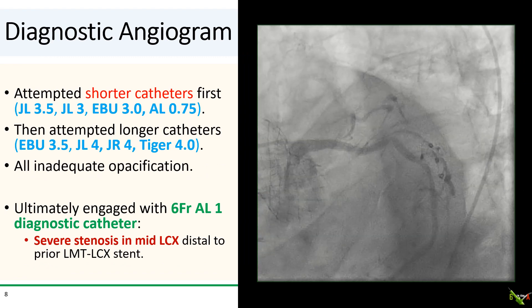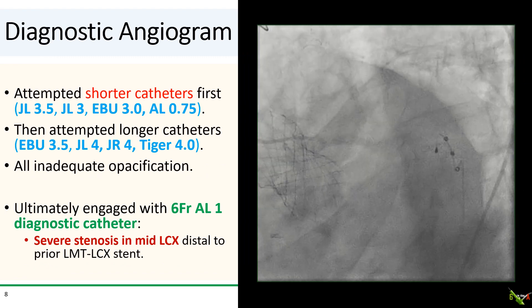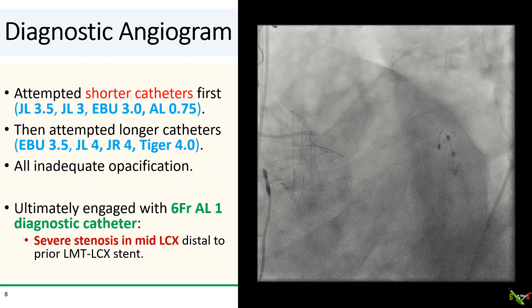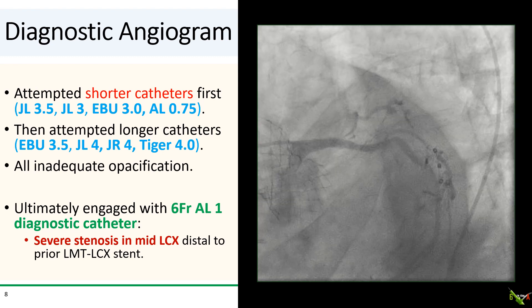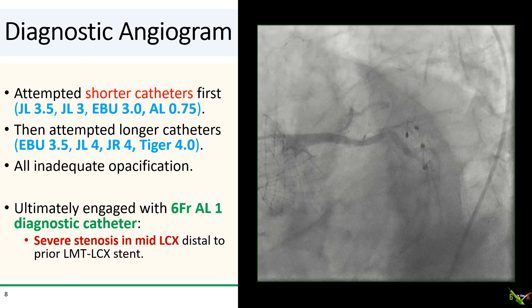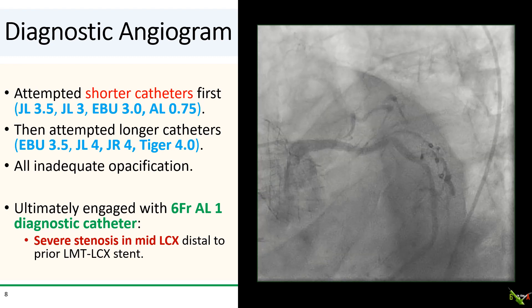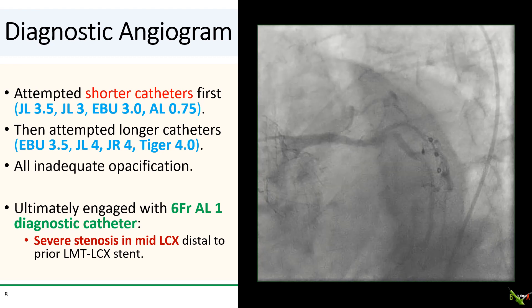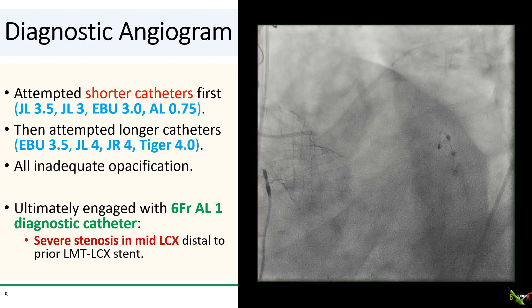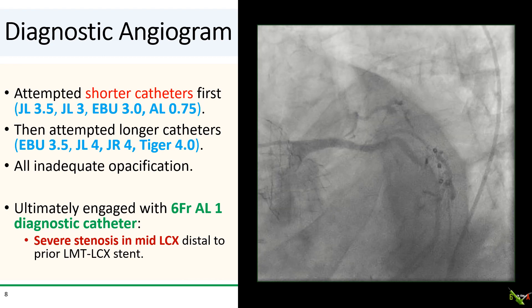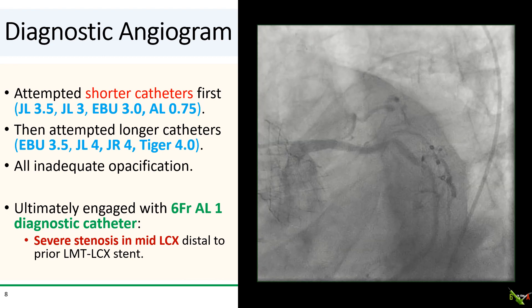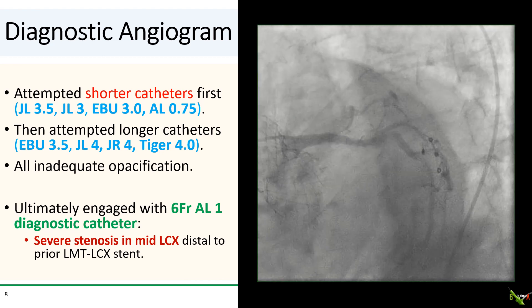So what did we do for this patient? Well, this was truly an exercise in futility. We attempted shorter catheters: first JL 3.5, then JL 3, then EBU 3, then AL 0.75—and none were successful.